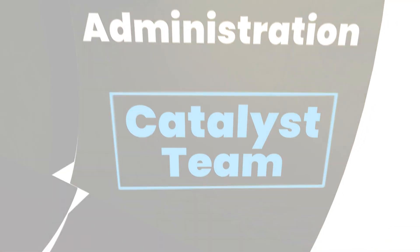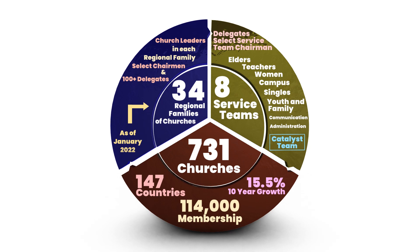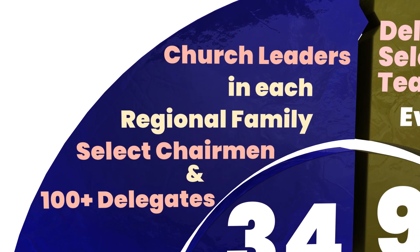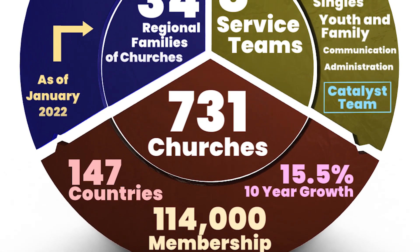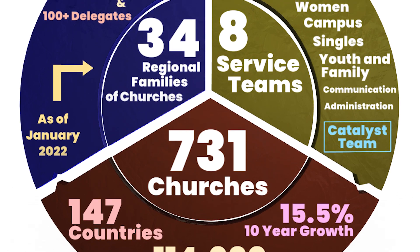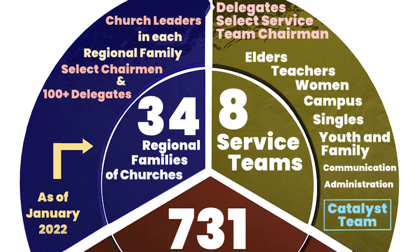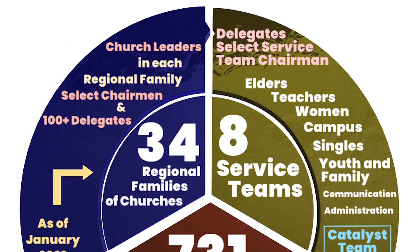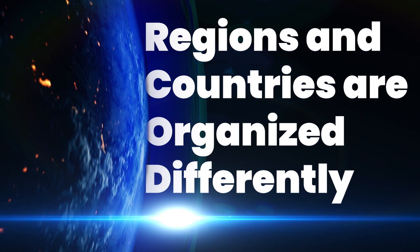So let's review. We have 731 churches organized into 34 families of churches by region. Each of these families has a chair couple to organize and facilitate as they work to meet global and local needs. Each family of churches also has delegates that are involved in leadership meetings, decision-making, and creating proposals to better and further the church in unity and missions, guided and aided by the catalyst team. The various service teams and task forces exist to serve specific needs of the churches and disciples. Each culture and country can organize how they see fit, and different regions are organized differently.